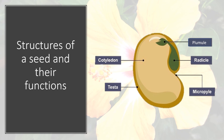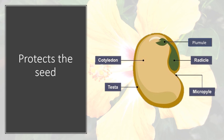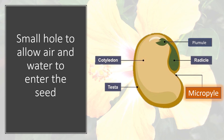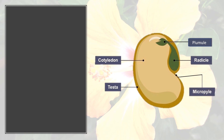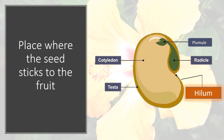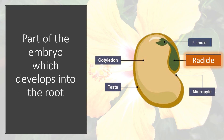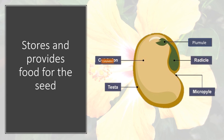After fertilization, the ovule grows inside the ovary and then develops into seeds. The functions of the structures of seeds are: testa — to protect the seed; micropyle — a small hole to allow air and water to enter the seed; hilum — the place where the seed was attached to the fruit; plumule — the part of the embryo which develops into the shoot; radicle — the part of the embryo which develops into the root; and cotyledon — to store and provide food for the seed.